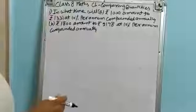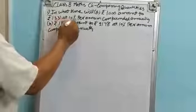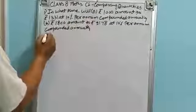Question number 1: In what time will Rs. 1000 amount to Rs. 1331 at 10% per annum compounded annually?